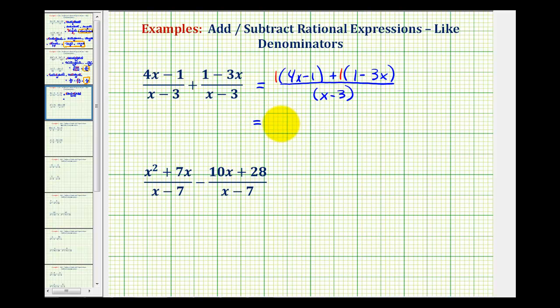So this will leave us with, again, a denominator of the quantity x minus 3, and then we'll have 4x minus 1 plus 1 minus 3x. And now we'll combine like terms in the numerator. Notice here we have negative 1 plus 1, that's going to be 0, and then 4x minus 3x is equal to 1x or just x.